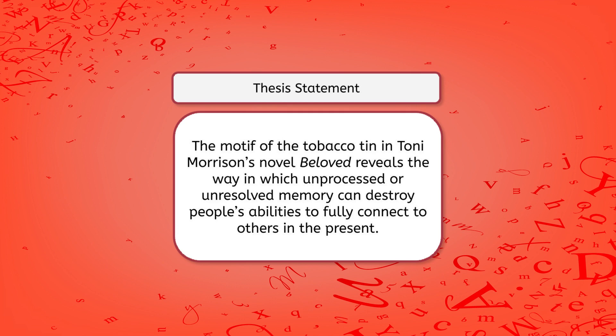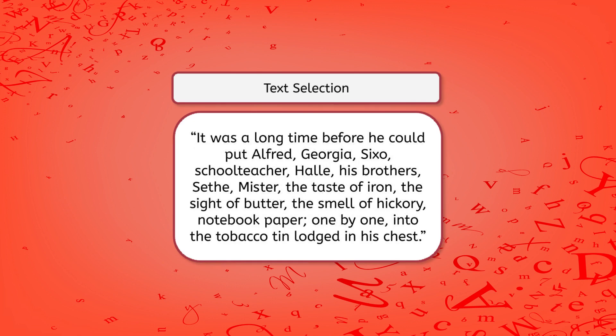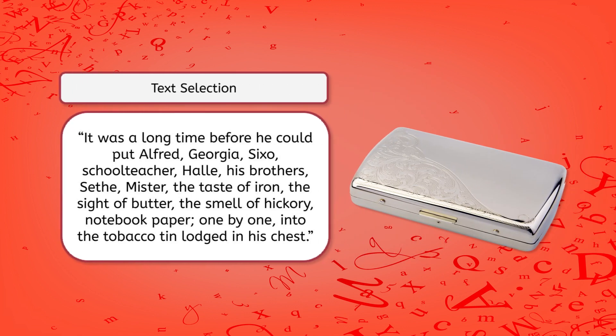One passage in particular was really powerful and telling of how one character, Paul D, is haunted by places, people, and experiences from his past. This passage reads: 'It was a long time before he could put Alfred, Georgia, Sixo, schoolteacher, Hallie, his brothers, Sethe, Mr. — the taste of iron, the sight of butter, the smell of hickory, notebook paper — one by one into the tobacco tin lodged in his chest.'